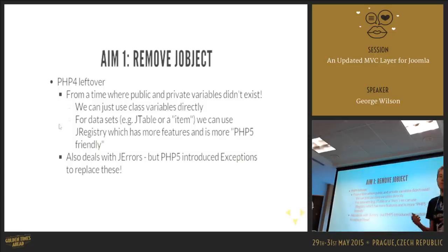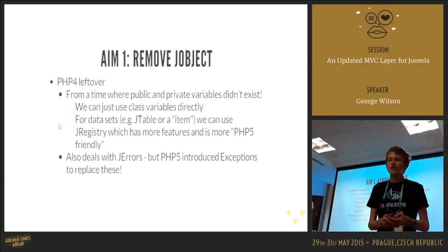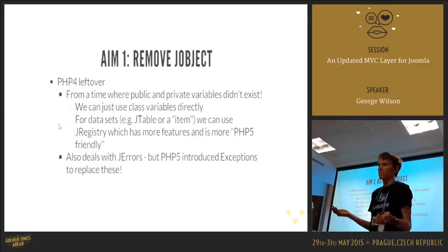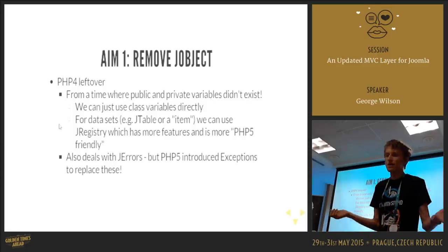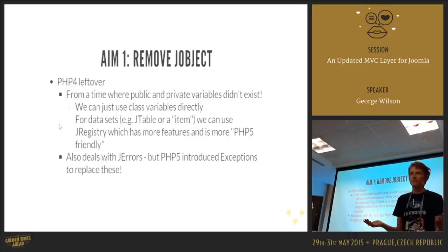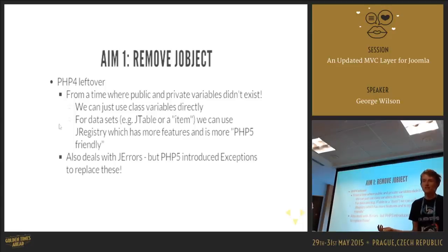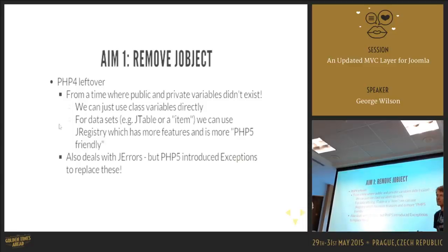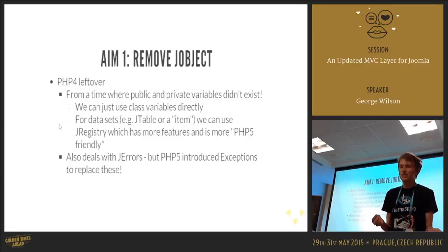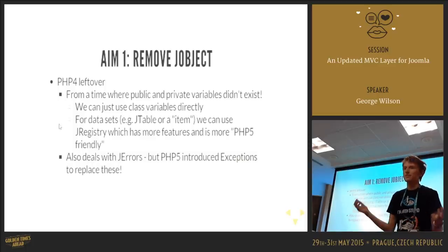The first aim was to remove JObject. JObject is a class that's kind of a PHP4 leftover from the early 1.5 days — from a time when private and public variables didn't exist, so we hacked around it with underscore prefixes. For data sets using get/set properties, we have JRegistry which does what JObject does and more, and does it better. JObject also gave us JErrors, but PHP5 has given us exceptions, so this class is just junk. It makes things notoriously hard to test because of its magic getters and setters.